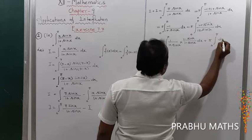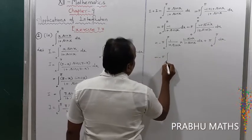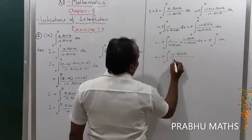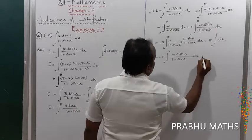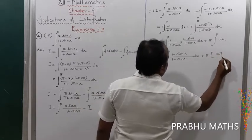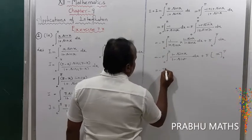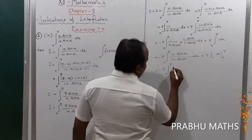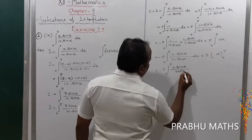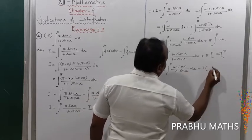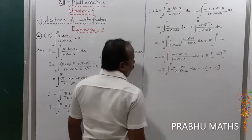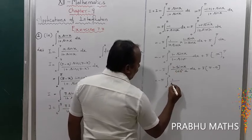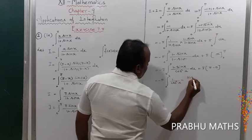So we get minus π times integral from 0 to π of (1 minus sin x) divided by (1 minus sin²x) dx plus π times [x] from 0 to π. The denominator 1 minus sin²x equals cos²x, giving minus π times integral from 0 to π of (1 minus sin x) divided by cos²x dx plus π times π.